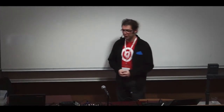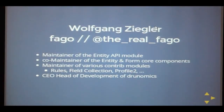My name is Wolfgang Ziegler, Fago on Drupal.org, and I'm the real Fago on Twitter. Unfortunately, Fago had been already taken. I'm the maintainer of the Entity API module, the Drupal 7 module, and I'm also co-maintainer of the core Entity API and Form components, and I've authored various content modules like Rules, Field Collection, or Profile 2. I'm also the CEO and Head of Development of Tronomics.